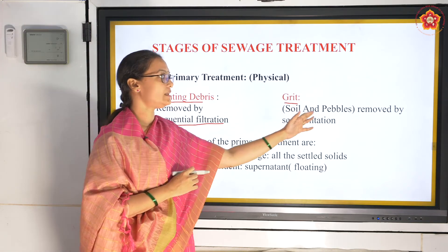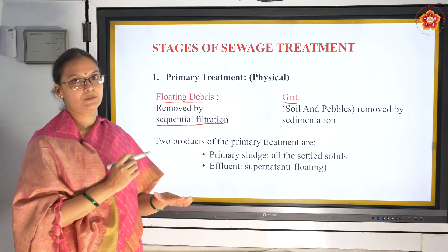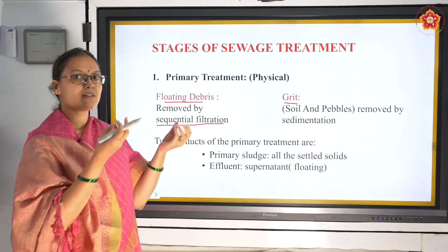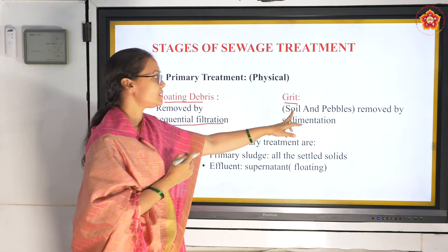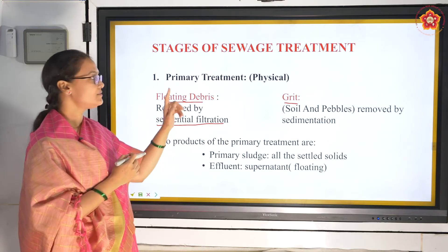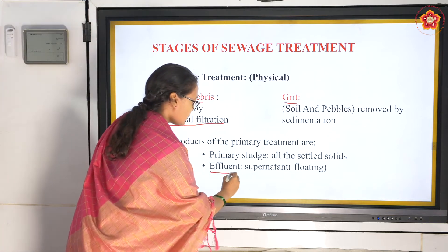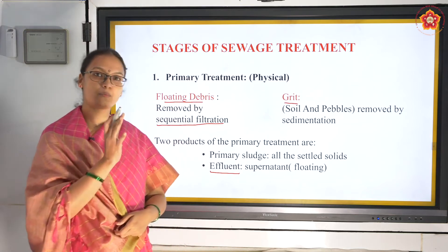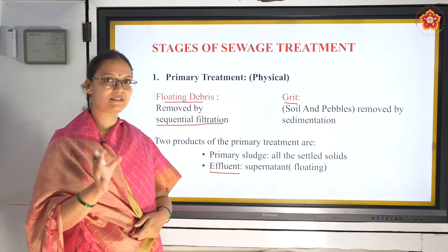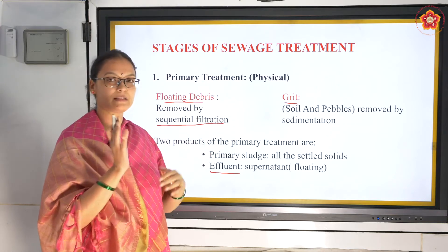What is grit? Grit is nothing but soil and pebbles. As the water enters a tank, all that is heavy settles down by a process called sedimentation - that is grit removal. After floating debris and grit are removed in the primary or physical treatment, whatever is left over is called effluent - the wastewater with organic matter.